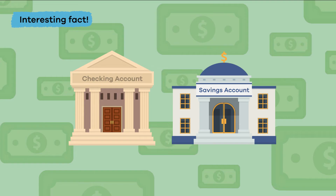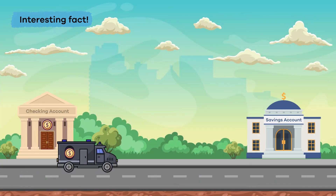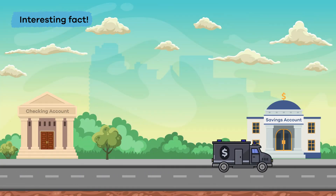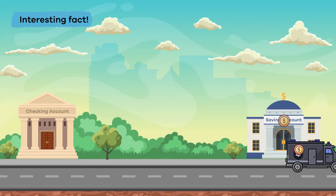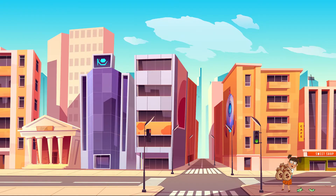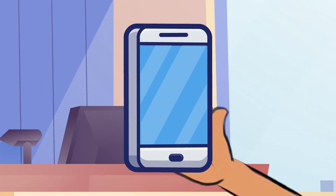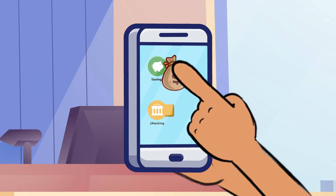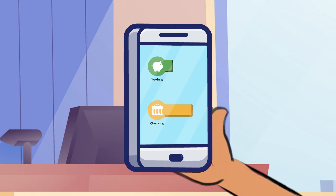Here is an interesting fact: you can actually link your checking and savings accounts together, which is helpful if you want to transfer money between accounts. This can be super helpful if you have extra money to move to savings, or if you need to transfer money from your savings to your checking account to pay for something.